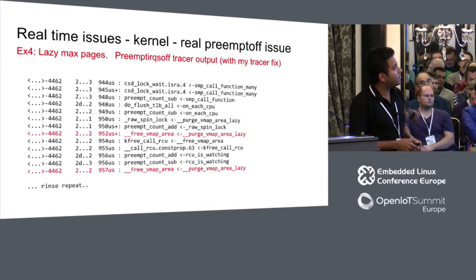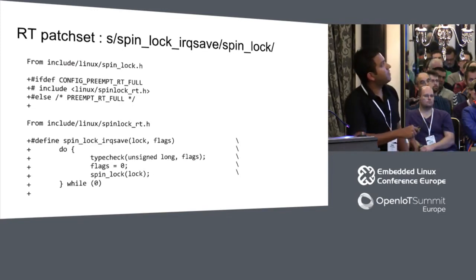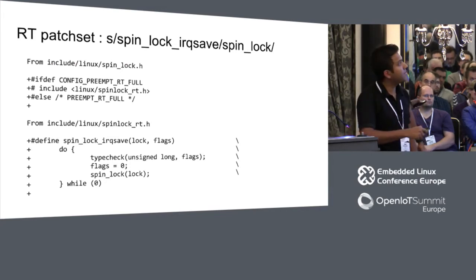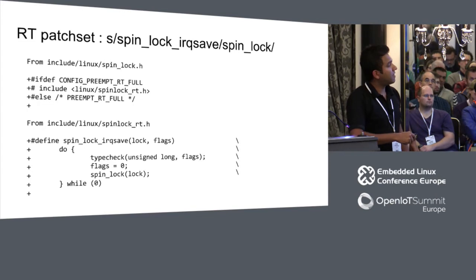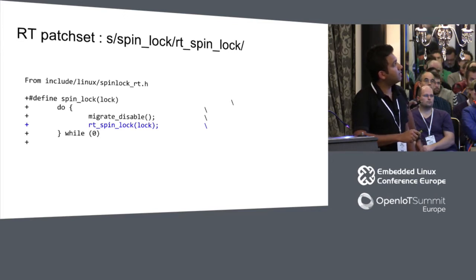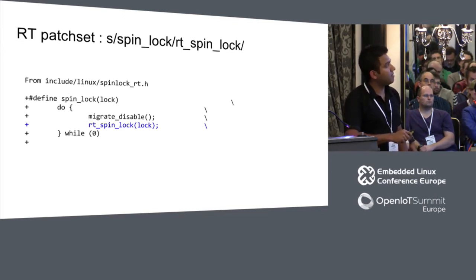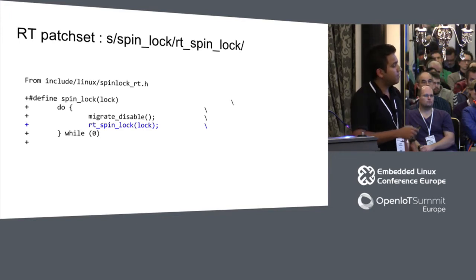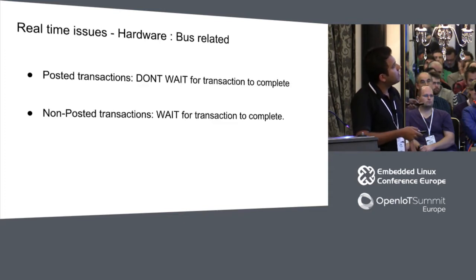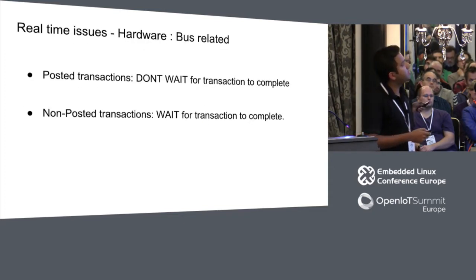The RT patch converts spin_lock_irqsave so it doesn't turn off interrupts. It gets re-defined from spin_lock to RT spin_lock in the spinlock_rt.h header file, which is a sleeping implementation — it sleeps while spinning. That's it for kernel issues; now we go into hardware issues.